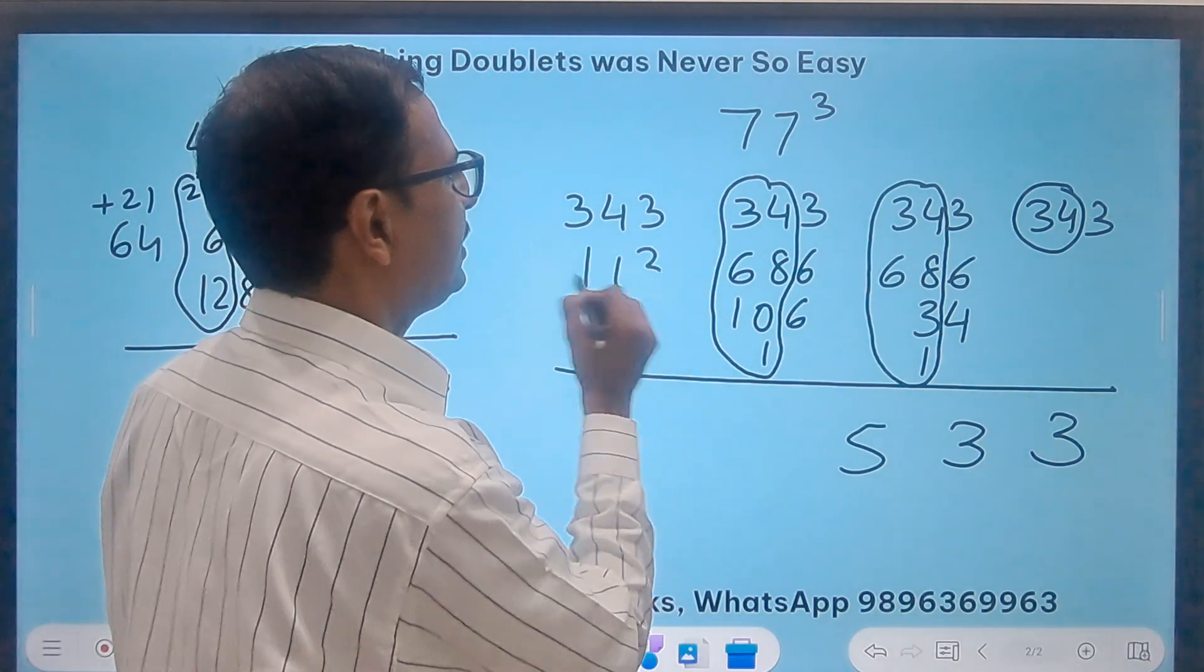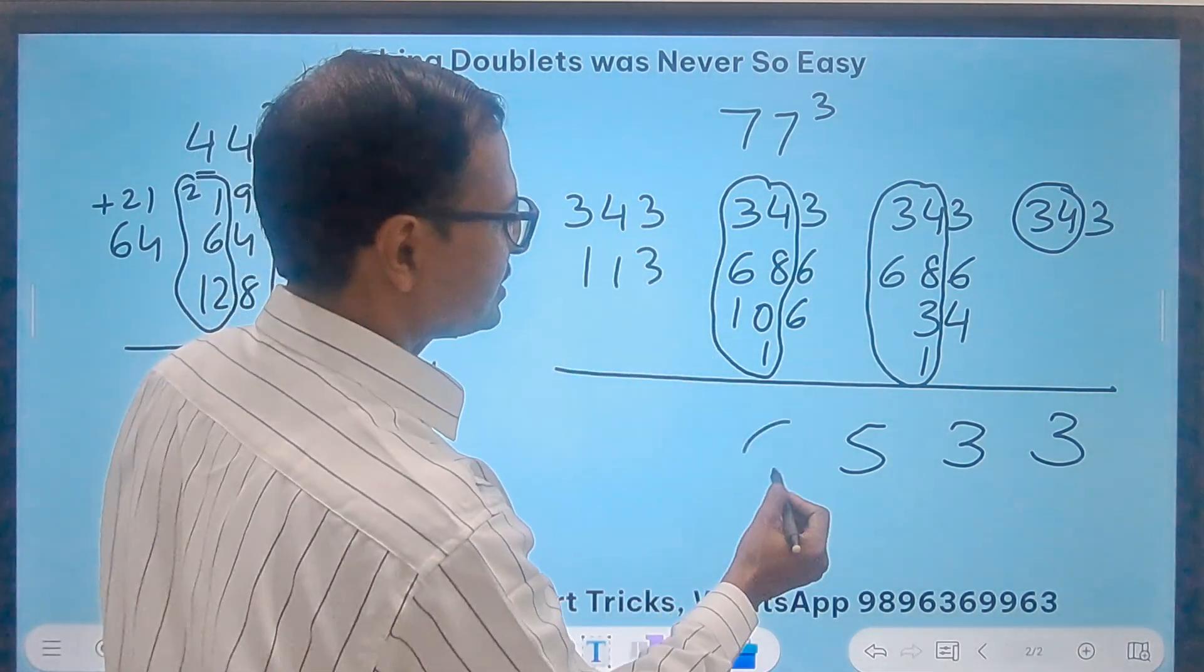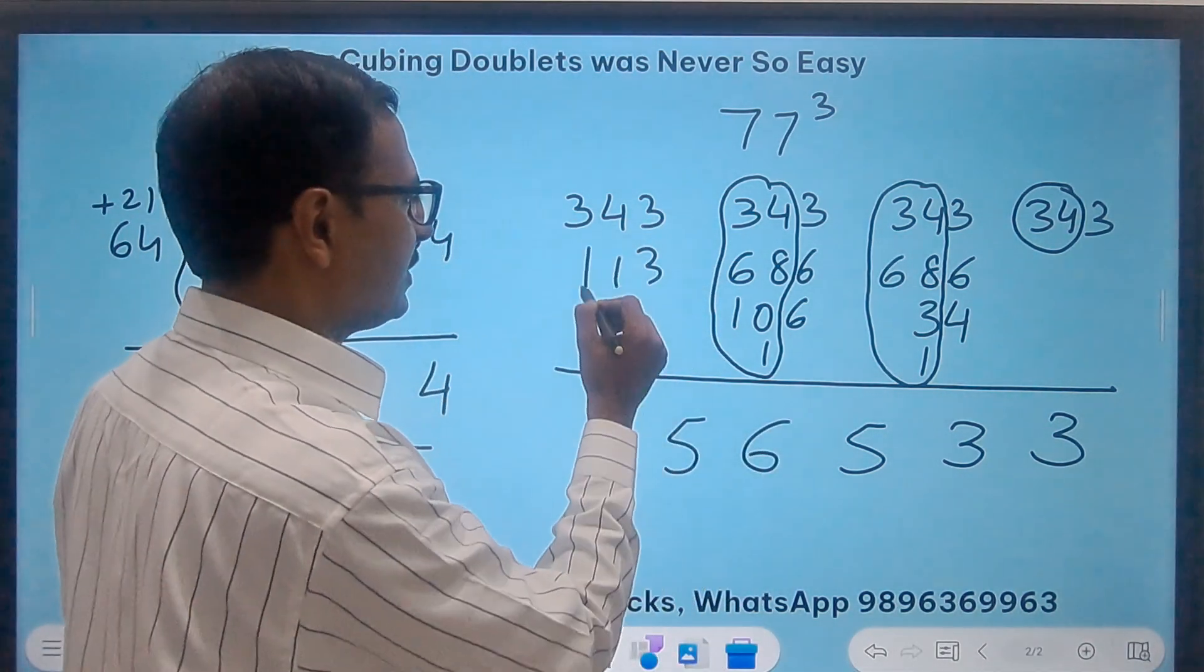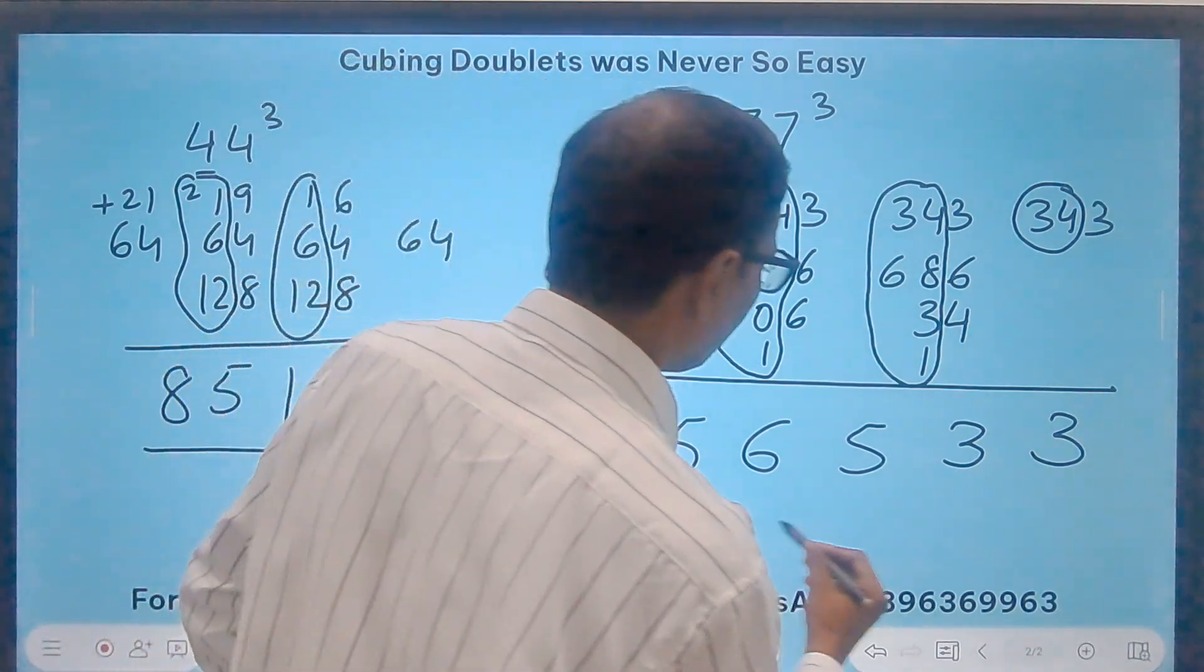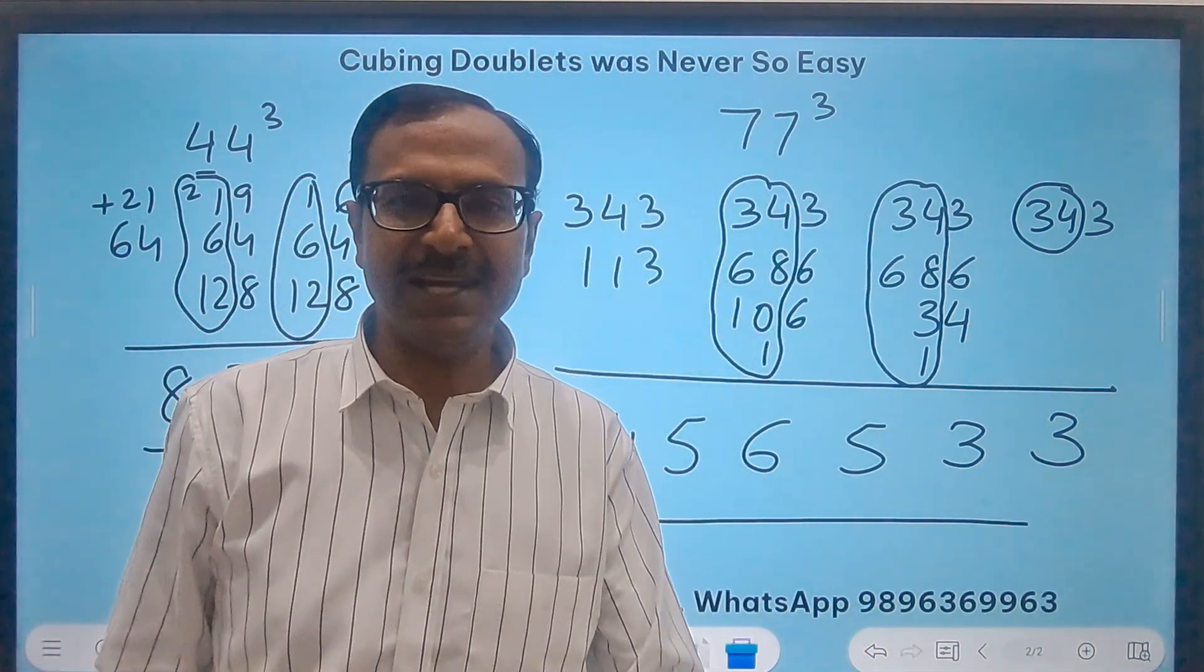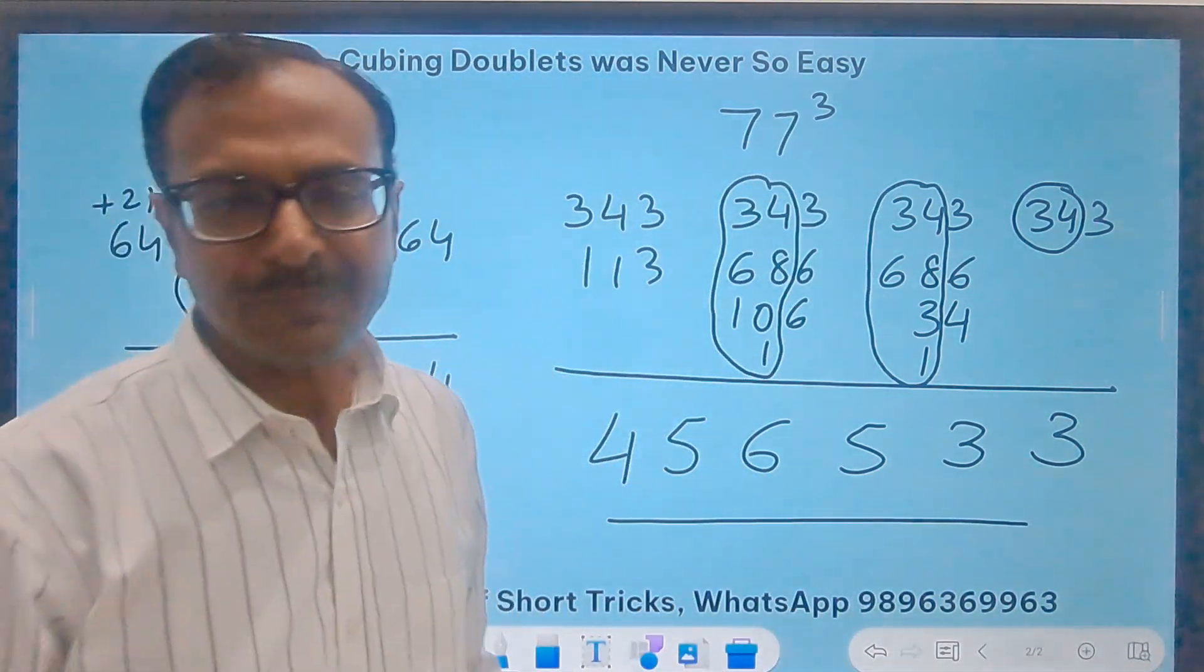So 113 here. And so 3 plus 3 is 6. 4 plus 1 is 5. And 3 plus 1 is 4. 4, 5, 6, 5, 3, 3 is the cube of 77.